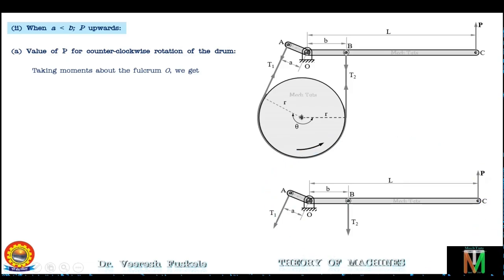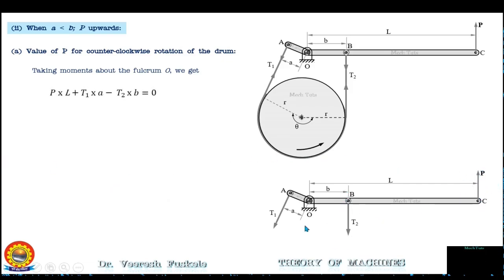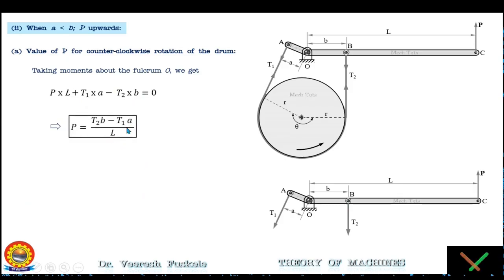P will also have a positive moment with magnitude P × l, but t2 will rotate in the clockwise direction, so t2 will have a negative moment with magnitude t2 × b. The moment equation is: t1·a + P·l − t2·b = 0, where P and t1 have positive moments and t2 has a negative moment. From this, the value of P = (t2·b − t1·a) / l.